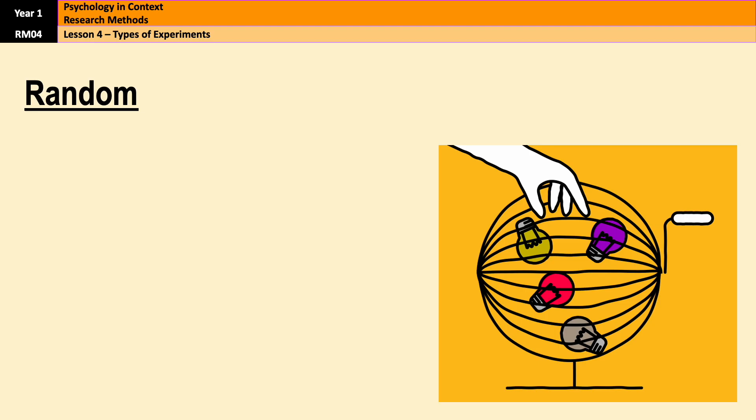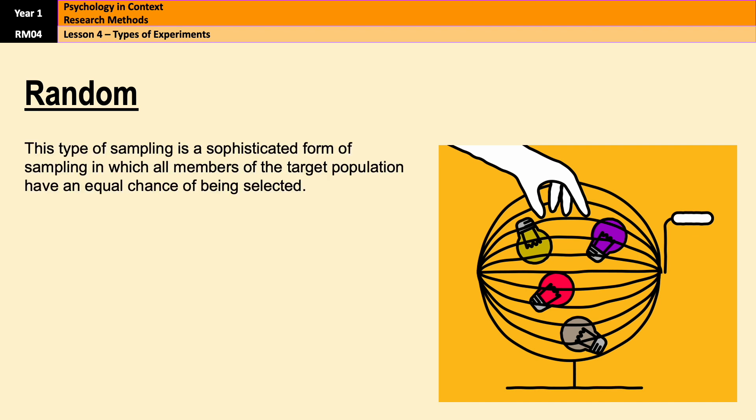Random sampling involves selecting participants entirely by chance, where each individual in the population has an equal probability of being chosen — a little bit like drawing names out of a hat, where every name has the same chance of being picked. For example, if a psychologist wanted to study the sleep patterns of 16 to 18 year olds at a particular school, they could assign numbers to all the students and then use a computer to randomly select a group.